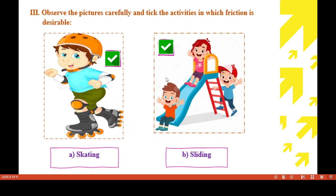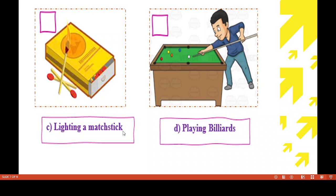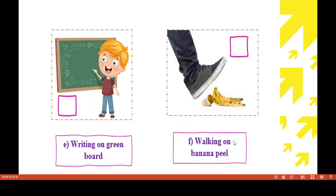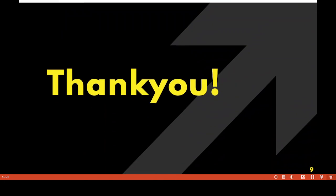Next pictures: lighting a match — frictional force is happening here. Playing billiards — frictional force is not happening here. Writing on a green board — yes, friction occurs between the chalk and the board, so writing on a green board is correct. Walking on a banana peel is not an example of desirable frictional force. Tick the correct activities, children.